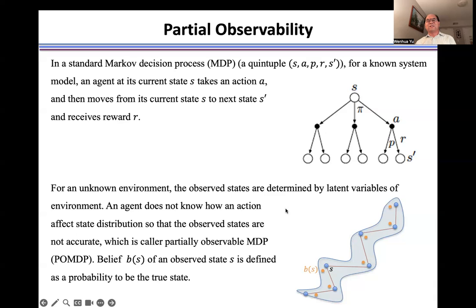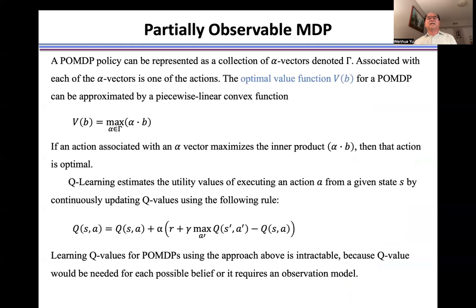To solve the partially observable Markov decision process, we define alpha vectors to represent the POMDP policy. Alpha vectors are associated with actions. Because we don't know how an action affects the next state, by adjusting the alpha vector to maximize the inner product α·b, we find the optimal policy.